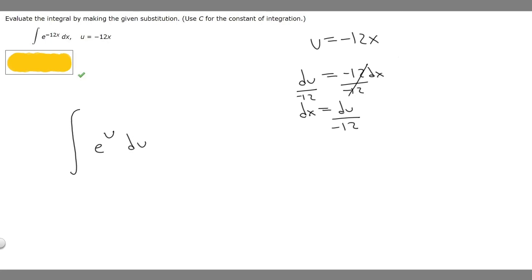And then du or dx, right. But we're going to replace dx with what it is. So dx is going to be equal to du over minus 12.